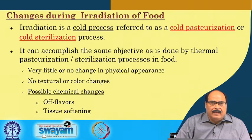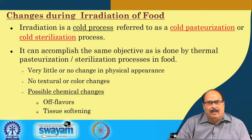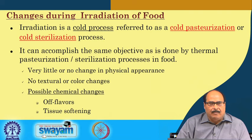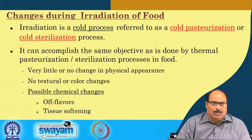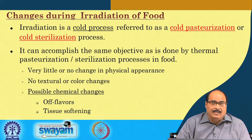But there are certain changes that take place in the food during the irradiation process. That becomes a very important consideration, as I told you in the earlier lecture, for optimizing the process and ensuring it does not result in any undesirable change. Irradiation is called a cold process — cold pasteurization or cold sterilization — and it can accomplish the same objective as thermal pasteurization and sterilization.